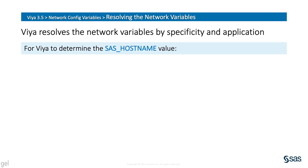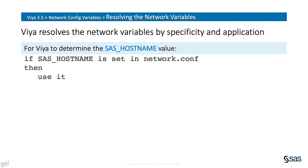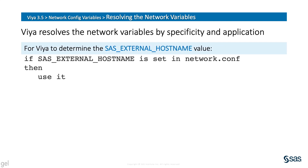Let's step through exactly how Viya resolves these variables to understand their relationships. For Viya to determine the value of SAS_HOSTNAME, it looks to see if the variable has been set. If so, it uses that value. But if not, then SAS_HOSTNAME will automatically be set to the equivalent of asking the operating system for this machine's fully qualified domain name. We see similar resolution rules for external hostname, but with one difference — if that variable isn't set, then it defaults to the value of SAS_HOSTNAME.